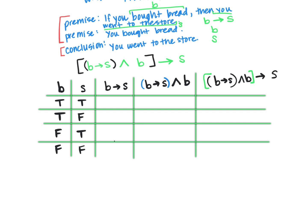So remember for the conditional, that's our third column here. For our third column, we are only false if we start with the if part being true and the conclusion being false. So that's going to be our big F here. And then everything else is true.